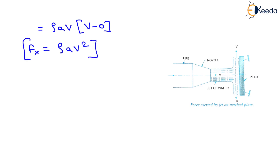For deriving this equation, we have taken initial velocity minus final velocity and not final velocity minus initial velocity. If the force exerted on the jet is to be calculated, then final minus initial velocity is taken. But if the force exerted by the jet on the plate is to be calculated, then initial velocity minus final velocity is taken. That is all about the force exerted on a stationary flat plate when the plate is held stationary normal to the jet.